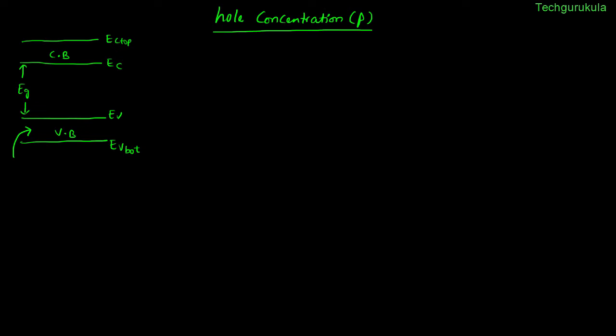I am assuming you have seen the electron concentration derivation video, so I have to explain a little less here. In order to find the hole concentration in the valence band, we need to first find how the energy levels are distributed in the valence band, and the probability of these energy states to be empty. If you multiply these two, we basically get the hole concentration in the valence band.